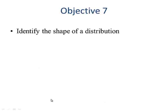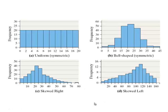This is the same data in StatCrunch. Lesson objective number seven, identify the shape of a distribution.